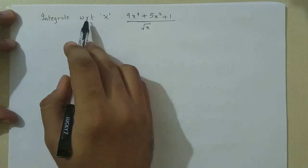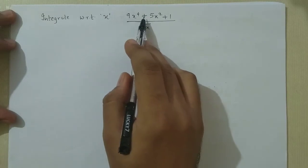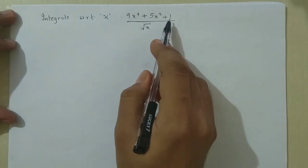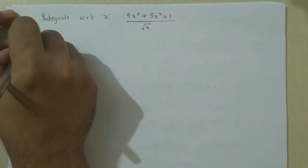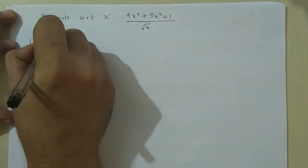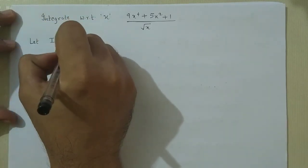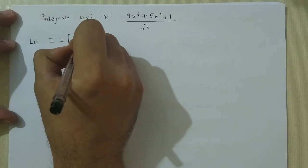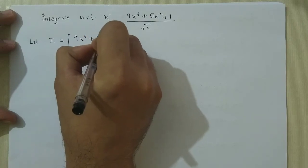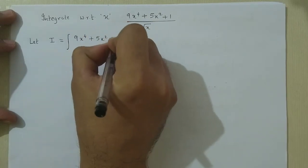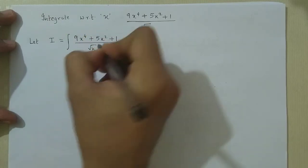The question is: integrate with respect to x the function 9x raised to 4 plus 5x squared plus 1, all over root x. So let us name the integral as I. Let I equal the integral of (9x^4 + 5x^2 + 1) divided by root x, dx.